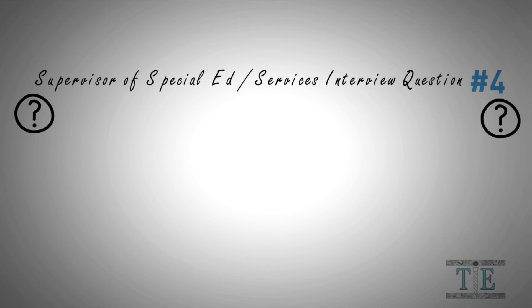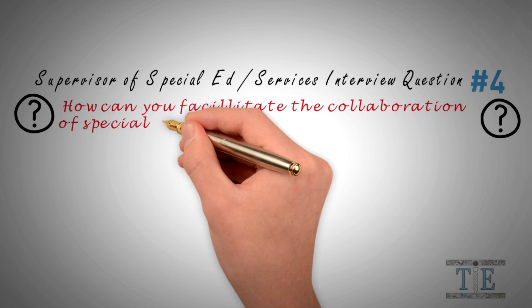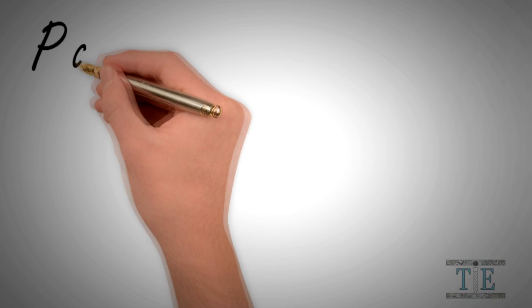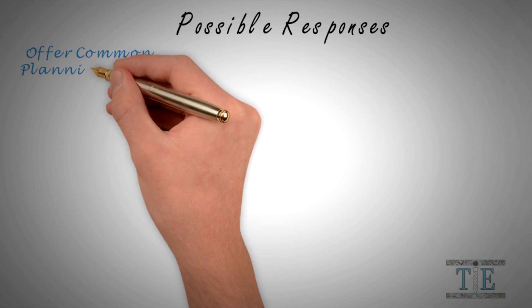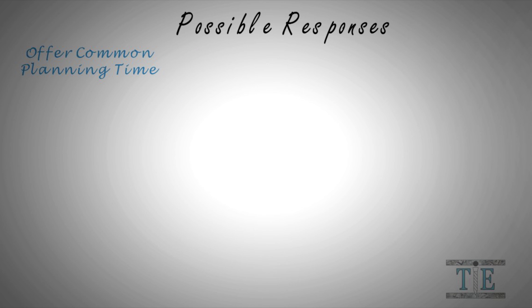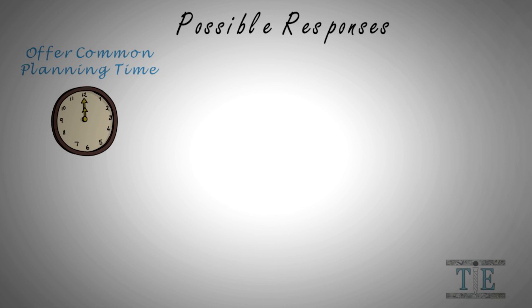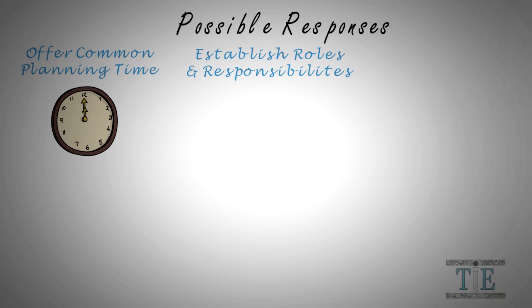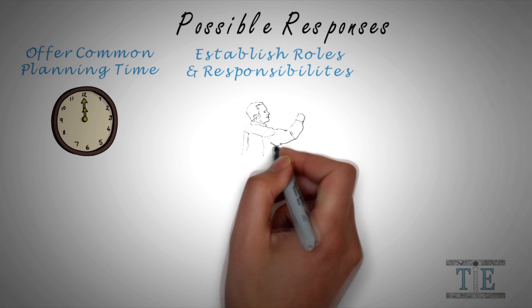Interview question number four. Here is a question that is frequently asked: How can you facilitate the collaboration of general education and special education teachers? There are many acceptable answers, but here are a few possible responses. First, offer common planning time for co-teachers — this gives teachers a chance to get on the same page and share teaching practices. Second, establish roles and responsibilities for both teachers. When roles and responsibilities are unclear, teachers begin to think the other teacher is lazy or derelict in their duty.